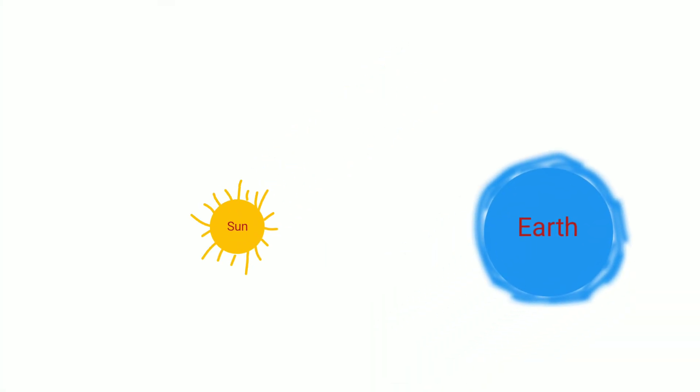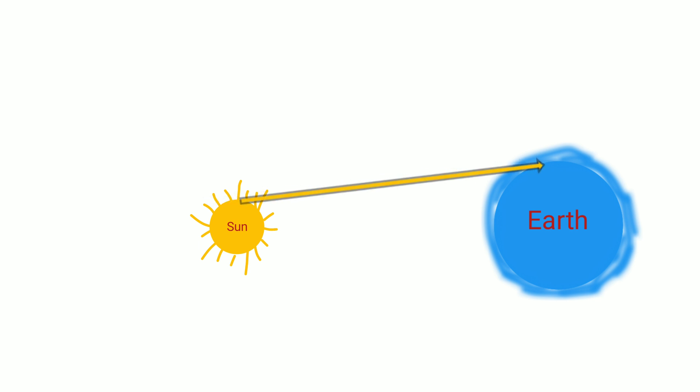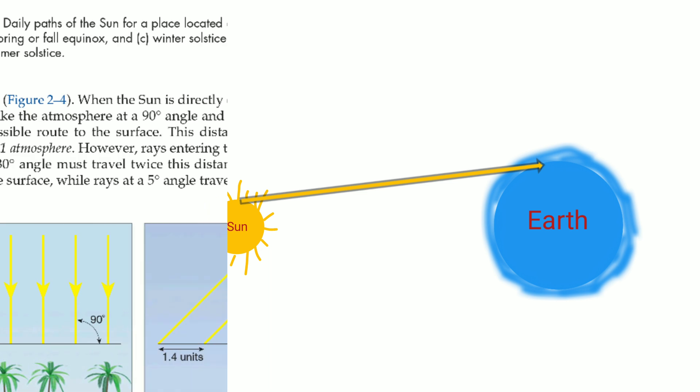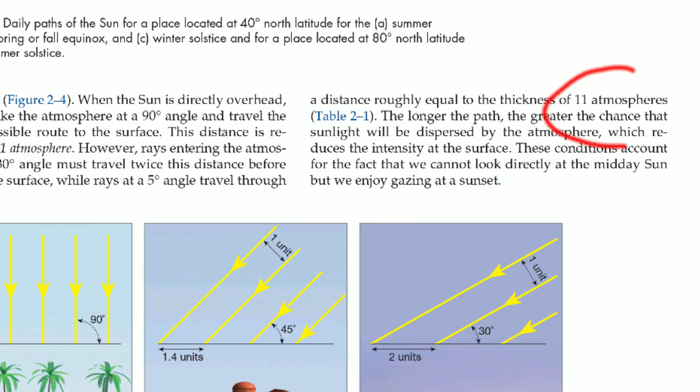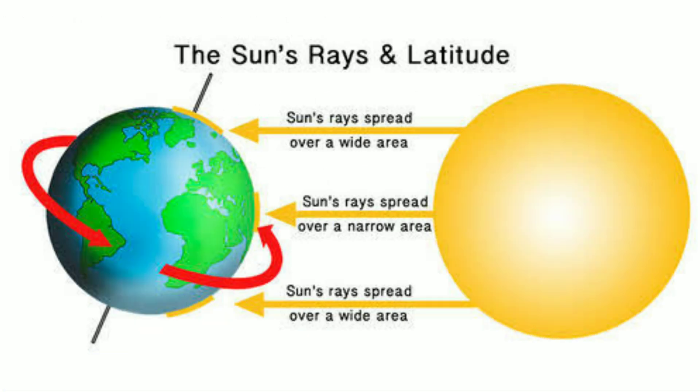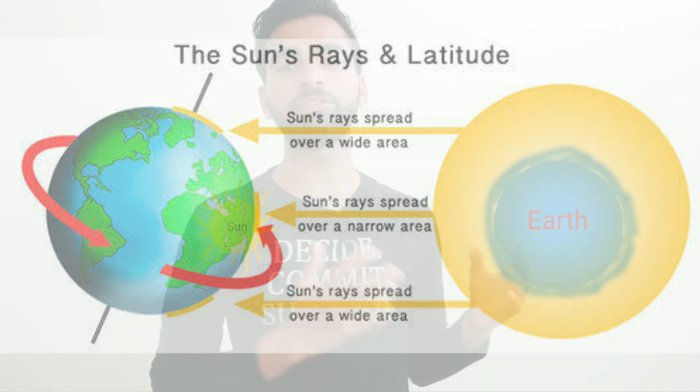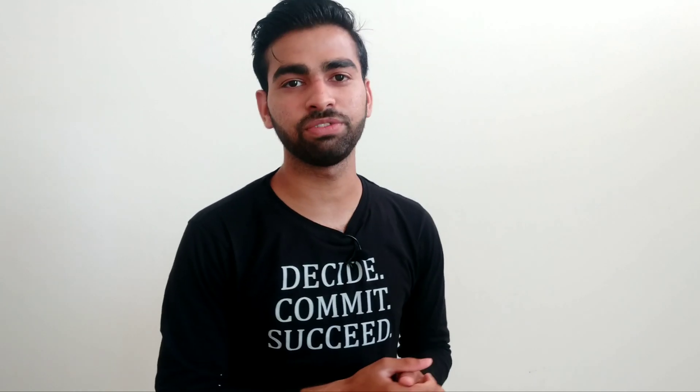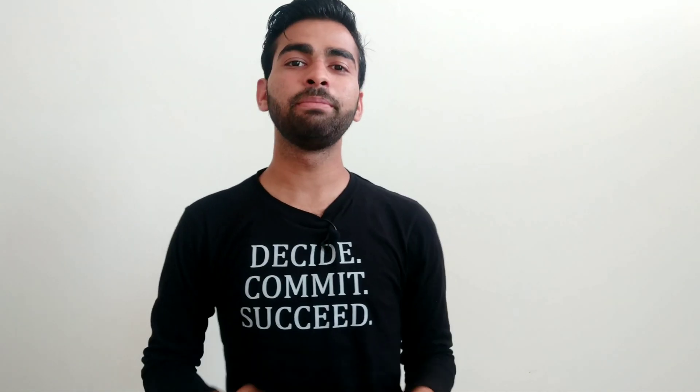But at the evening or at the morning time, the ray coming from the sun creates only 5 degree angle with the earth's surface and it has to cross the thickness of 11 atmospheres. And that's why most of the light coming from the sun scatters in the atmosphere and the intensity becomes very less and we can see the sun very easily.